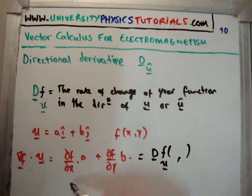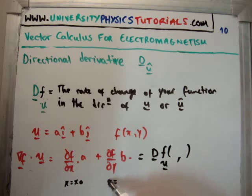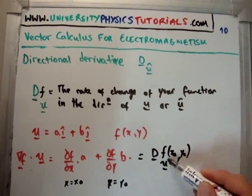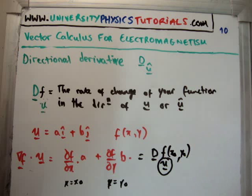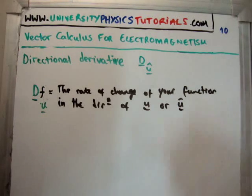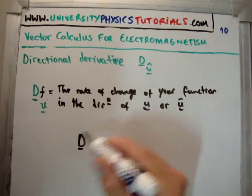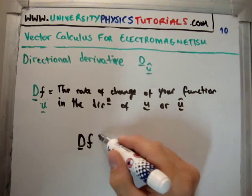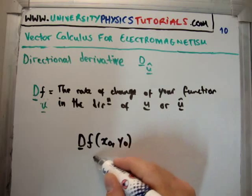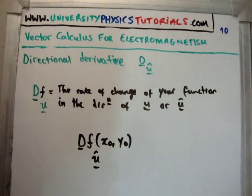If we plug in x = x₀ and y = y₀, we get the directional derivative at (x₀, y₀) of function f in the direction of U. Often we like to work with unit vectors, so we would write the directional derivative of f evaluated at (x₀, y₀) in the direction of the unit vector U-hat.